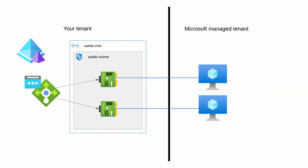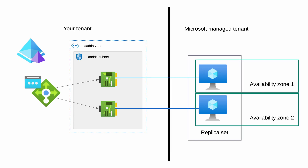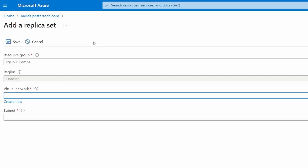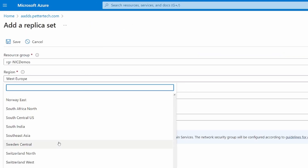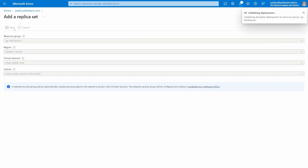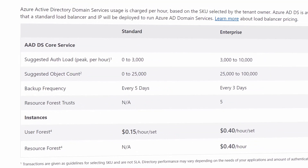The two domain controllers make up what Microsoft refers to as a replica set, and the two are deployed in different availability zones if the region you are deploying in has support for that. But they are deployed in a single subnet, which means the service is bound to that one VNet and only one single region. If you want to, you can create additional replica sets in any region you want, but then you would need to upgrade from the standard SKU to either premium or enterprise. This upgrade also gives you access to a couple more features, like creating trusts, of course with the additional cost.